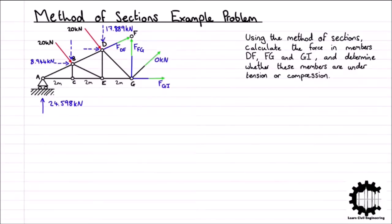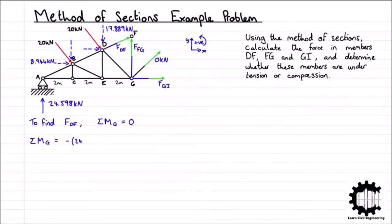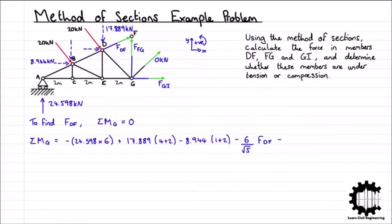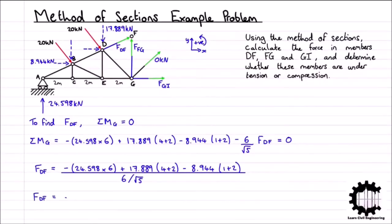Going back to the left side of the structure, we determine force FDF by equating all moments about node G to zero, chosen because it eliminates the other unknowns. Taking anticlockwise as positive, the sum of moments about node G equals: −24.598×6 + 17.889×(4+2) − 8.944×(1+2) − (6/√5)·FDF = 0. Rearranging, FDF = −25kN. Since we assumed tension and the value is negative, the force of 25kN in member DF is compressive.